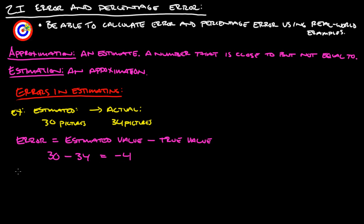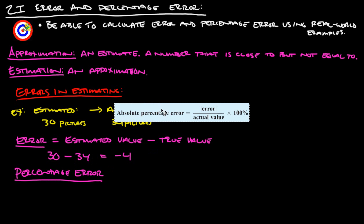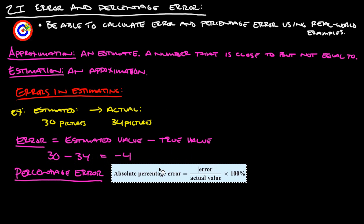Next thing we're going to look at is percentage error. They give us a nice formula in the book. Here is our percentage error, and they call it absolute percentage error because they just take the absolute value of the error.